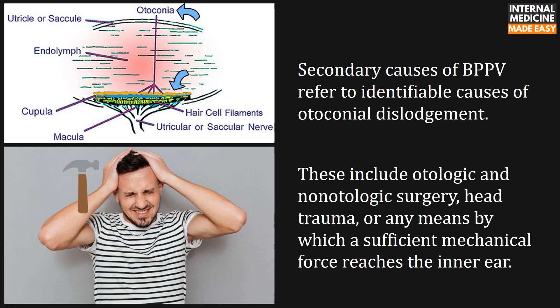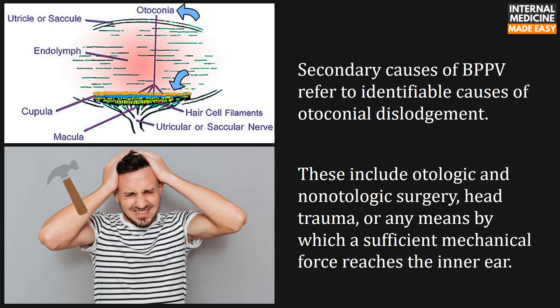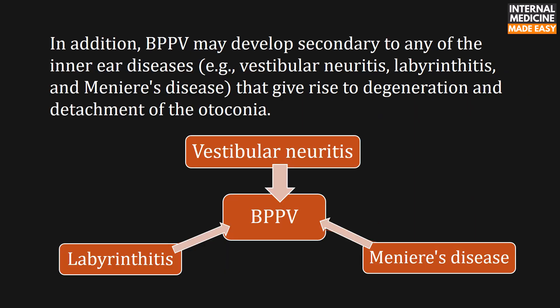Secondary causes refer to identifiable causes of otoconia dislodgement. These include otologic and non-otologic surgery, head trauma, or any means by which a sufficient mechanical force reaches the inner ear. In addition, it may develop secondary to any of the inner ear diseases that give rise to degeneration and detachment of the otoconia.